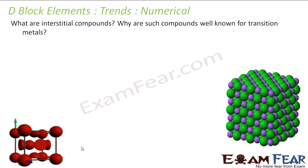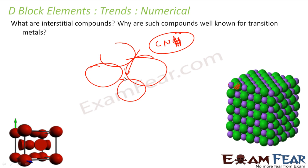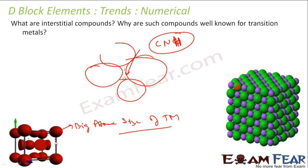There are compounds called interstitial compounds, well known for transition metals. Transition metals are big in size, so when you pack them together you get large voids. Small atoms like carbon, nitrogen, and hydrogen can fit into these big voids easily.